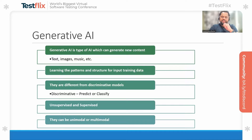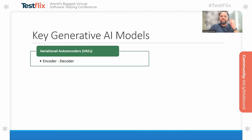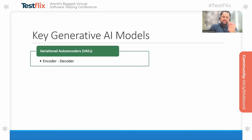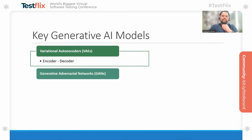Now let's try to understand some of the widely used generative AI models. Number one is the variational autoencoder, which is a deep learning neural network that uses the concept of encoder and decoder. The encoder is a neural network which tries to create sample data after encoding it into the latent space. On the other hand, the decoder tries to transform this representation into actual content. Examples of variational autoencoders include data creation such as text and images, and they are also widely used for anomaly detection.